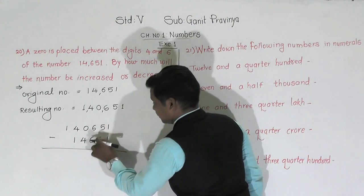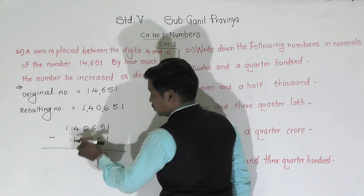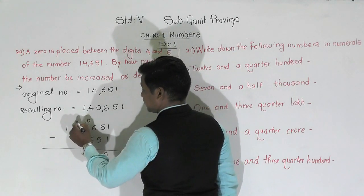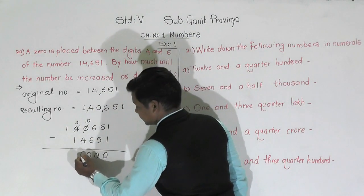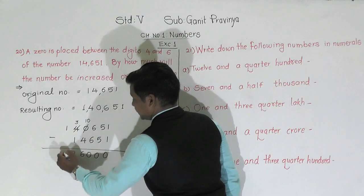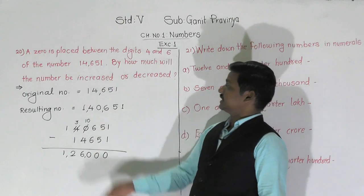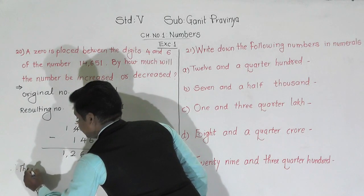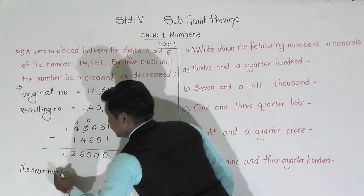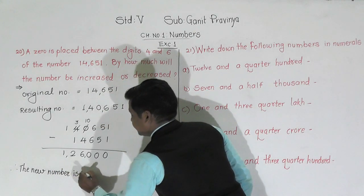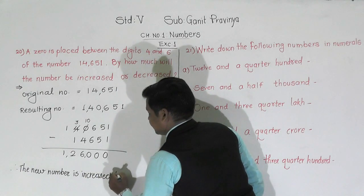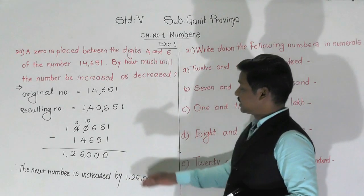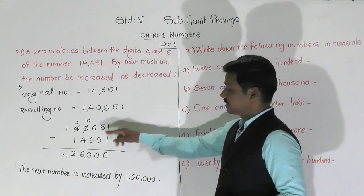Subtracting: ones 1 minus 1 = 0, tens 5 minus 5 = 0, hundreds 6 minus 6 = 0. At thousands place: 0 minus 4 — not possible, so borrow from ten-thousands. 10 minus 4 = 6, and 3 minus 1 = 2, and 1 remains. So the new number is increased by 1,26,000. The new number is more than the original by 1,26,000.